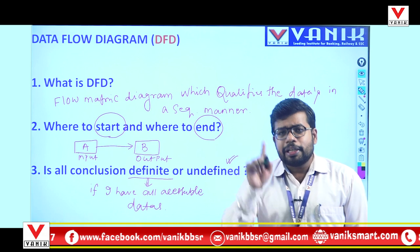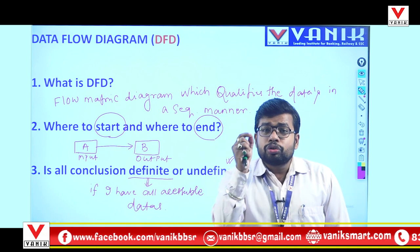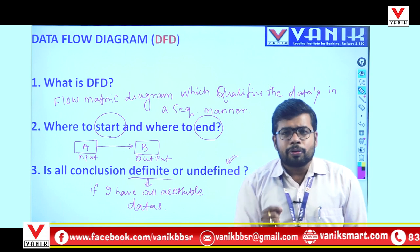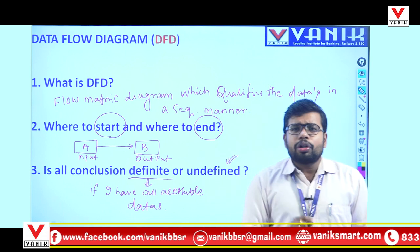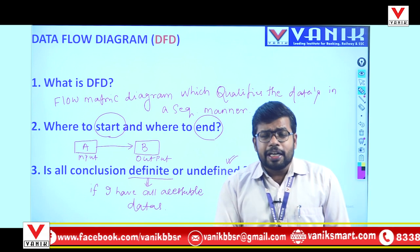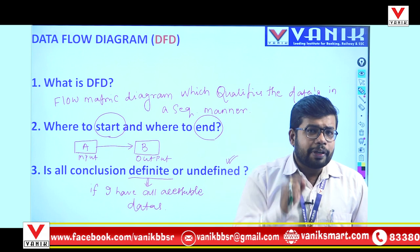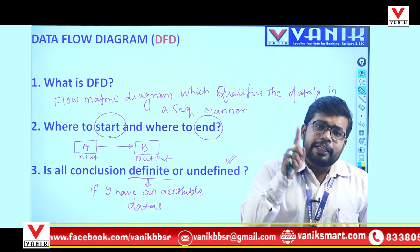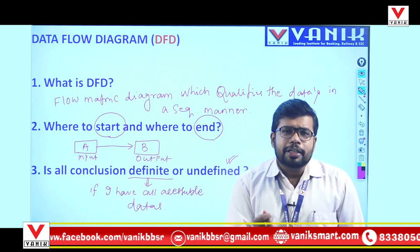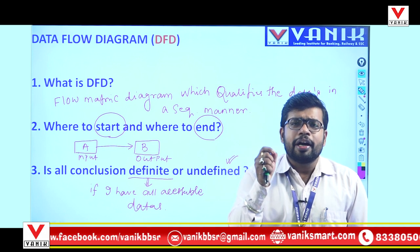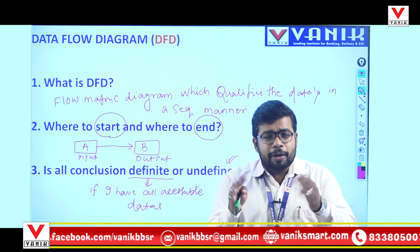To solve a data flow diagram, we need to know: the starting point and the end point, and whether all conclusions are definite. If all the information is given in the data flow diagram, it is definite. If any information is missing, it is undefined — that is, cannot be determined.